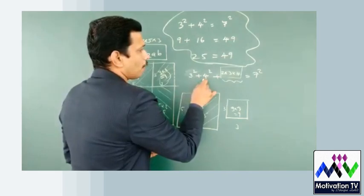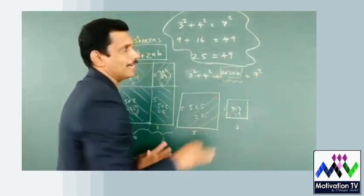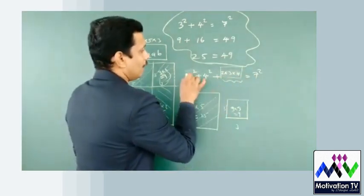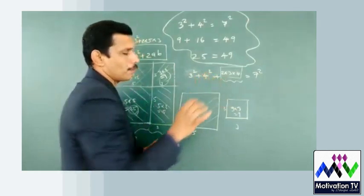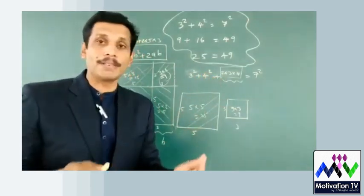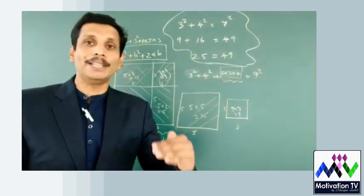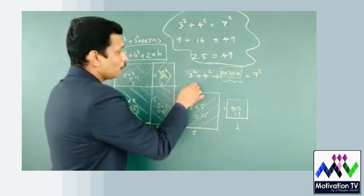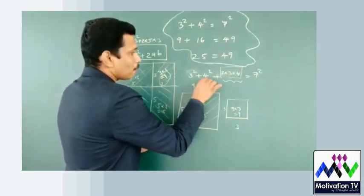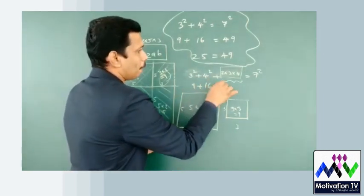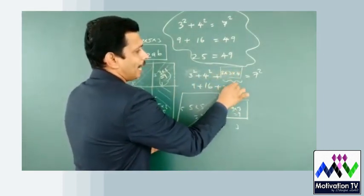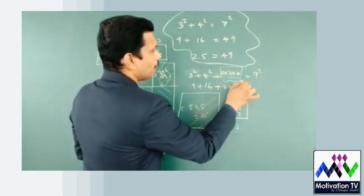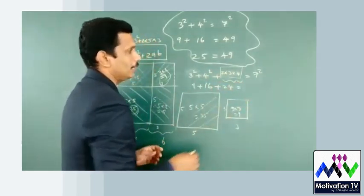3 squared plus 4 squared equals 5 squared. That's why 3 squared plus 4 squared equals 5 squared — that scale is equal, 1 squared equals 5 squared.